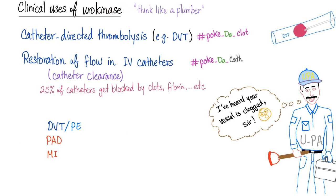Clinical uses of urokinase — think like a plumber. First, catheter-directed thrombolysis: if a patient has DVT, introduce a catheter, deliver urokinase, and break up the clot. Second, restoration of flow in IV catheters — catheter clearance. About 25% of catheters get blocked by blood clots and fibrin. To clear the catheter, introduce urokinase into it. This is called catheter clearance.